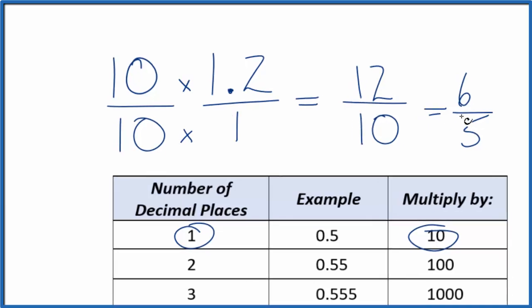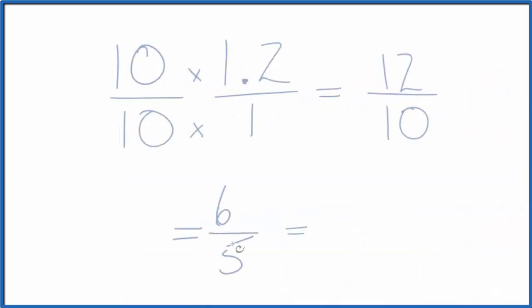Let's rewrite this as a mixed fraction. So 5 goes into 6 one time with one left over. So we'll call it 1 and 1 fifth. So 1 and 1 fifth, that's the same thing as 6 fifths or 1.2. 1 times 5, that's 5 plus 1, that gives us the 6, 6 over 5.